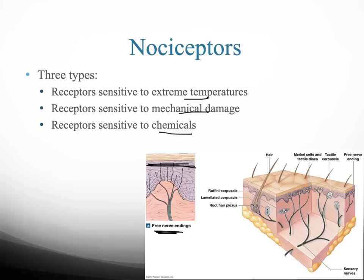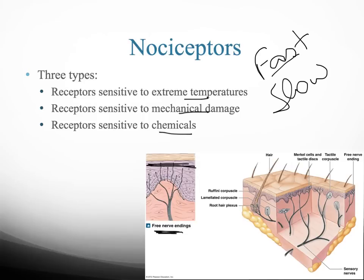We can also divide nociceptors by the type of pain sensation we feel. We have two different pathways: fast pain and slow pain. Fast pain means the sensation reaches you really fast — it goes directly to your central nervous system. It's usually associated with pricking pain or cuts.